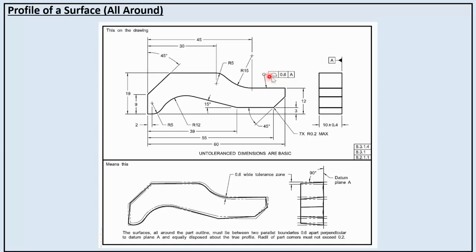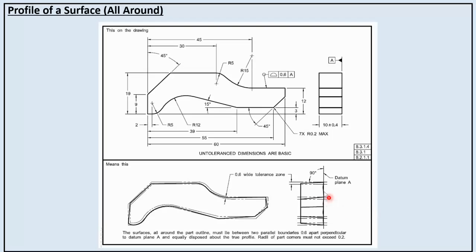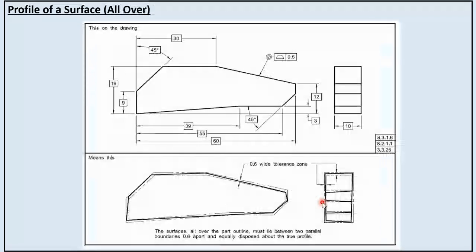For profile of a surface all around, all surfaces around the part profile must lie between two parallel boundaries 0.6 apart, perpendicular to datum plane A and equally disposed about the true profile. The radius of corners must not exceed 0.2. The complete profile of the component is taken with a total geometrical tolerance of 0.6. For profile of a surface all over, there is no datum reference — the complete geometrical tolerance covers the whole part including all surfaces and irregularities, with all edges included and the surface all over lying between two parallel boundaries 0.6 apart and equally disposed about the true profile.